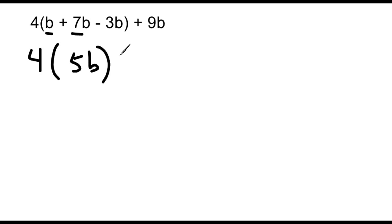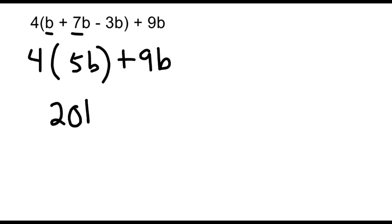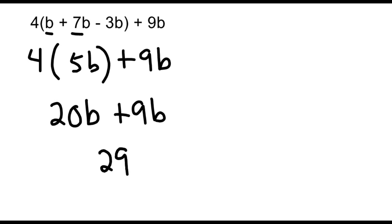We bring down the plus 9b at the end. Next, we multiply 4 by 5b — if we had four sets of 5b, that gives us 20b. Now we add that with 9b for a total of 29b. So we were able to take the beginning expression and simplify it all the way down to one term.